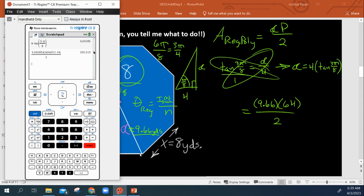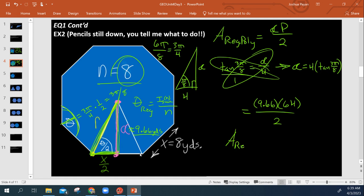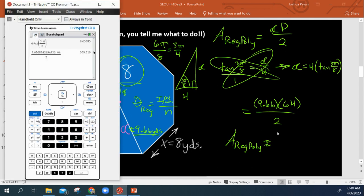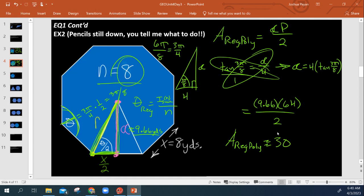And we get 309.02. So, the area of our regular polygon is about, I already forgot, 309.02. And that is in square yards.